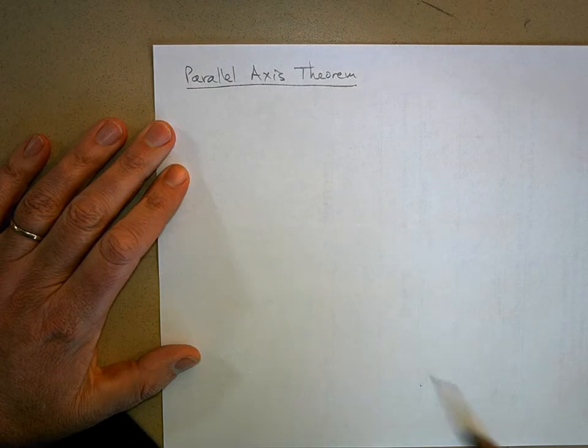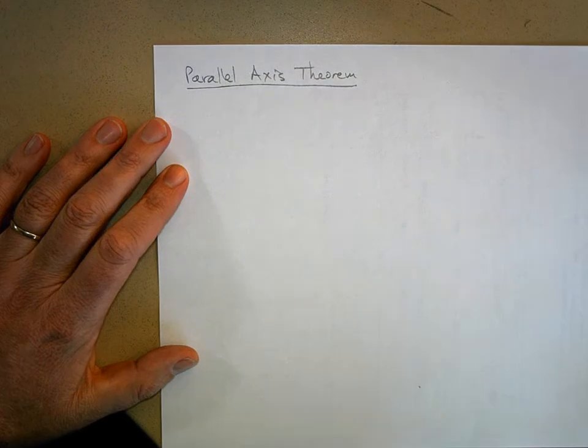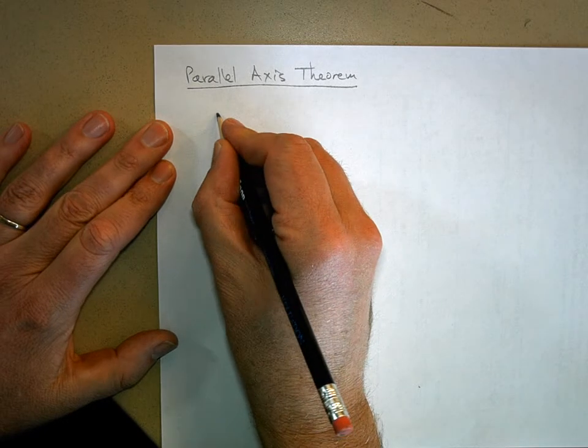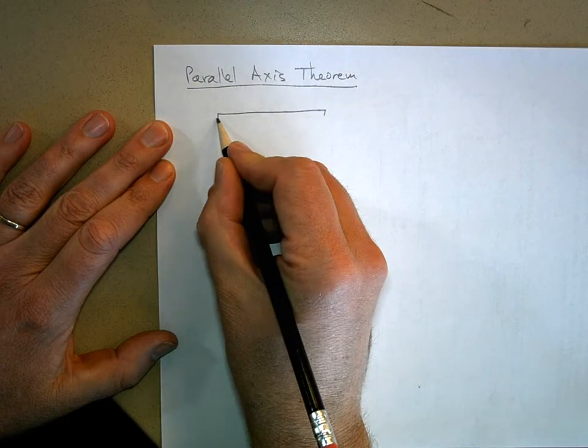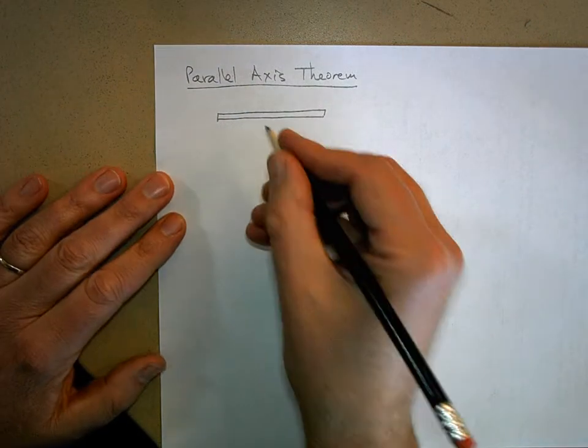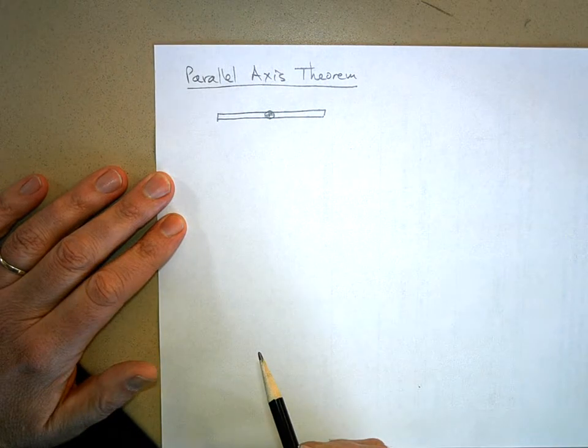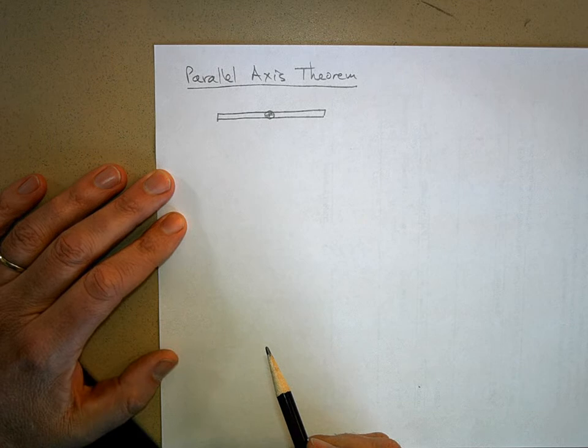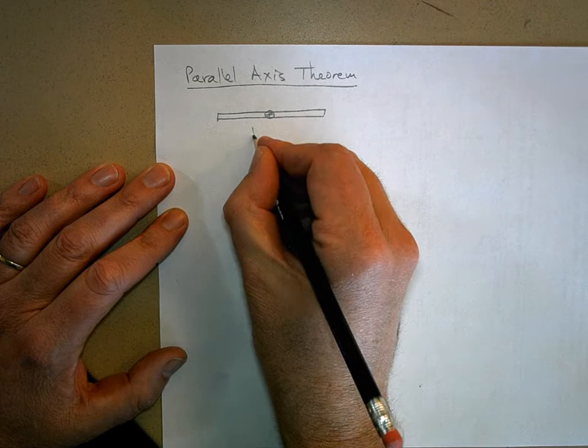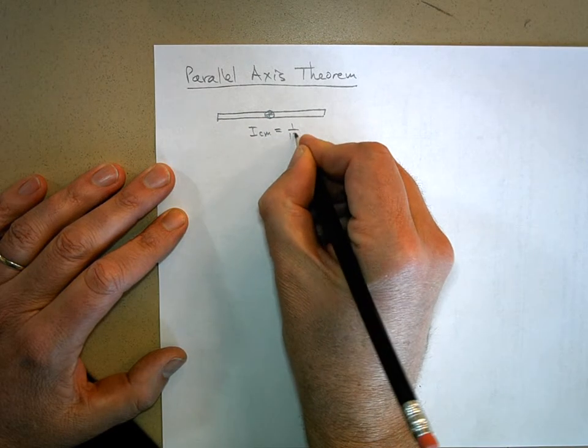There is a nice little proof of this on page 305, but I'm not going to go through the proof. But if you take an object like this, let's use the stick as an example. We just showed that if you rotate it about the center of mass, we derived using calculus the equation for the rotational inertia.